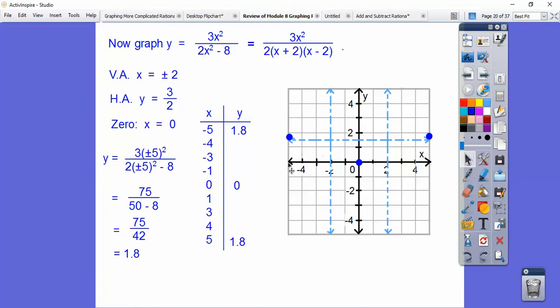75 over 42 is about 1.8. So negative 5 is just up about 1.8. Here's 1, here's 2. So 1.8 is just above the asymptote of 1.5. And same on this side.